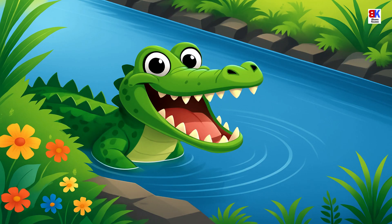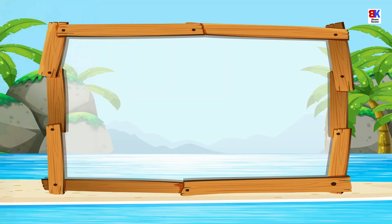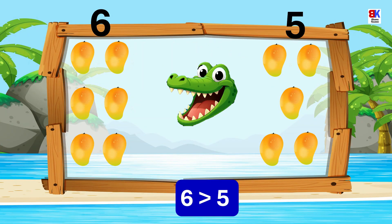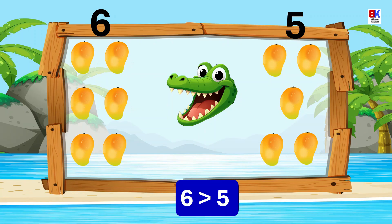We have six mangoes on one side and five mangoes on the other side. Which one is greater? That's right — six is greater than five, as Mr. Alligator opens his mouth at the bigger number, which is six.